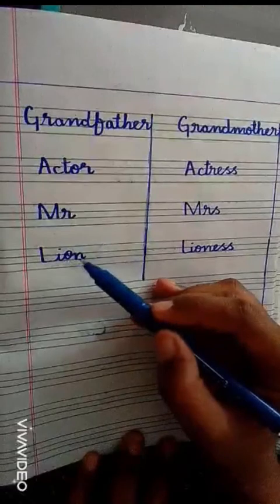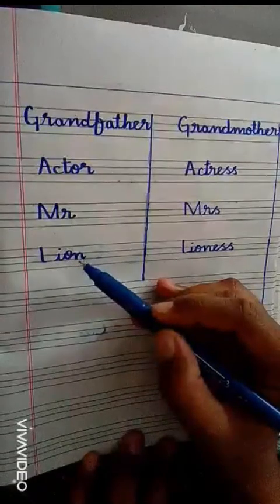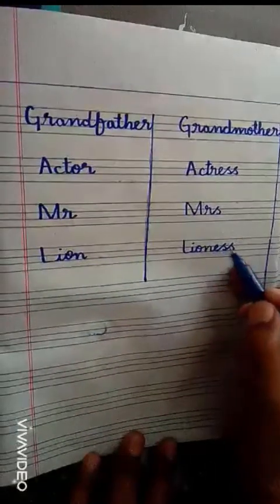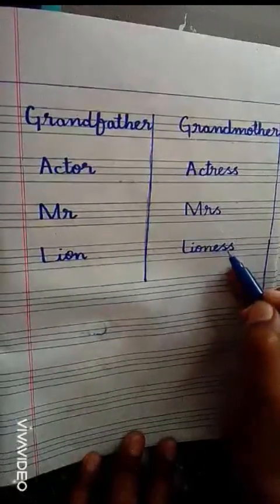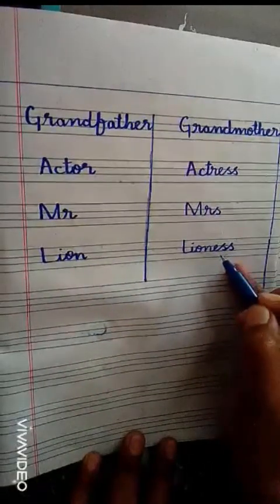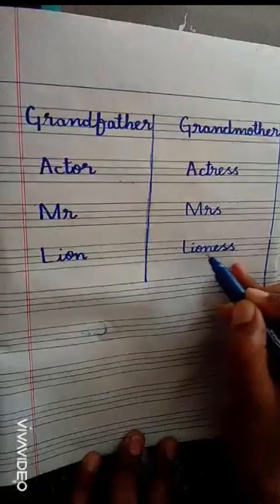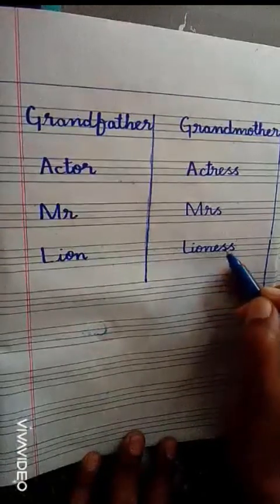Lion — L-I-O-N. That is sher. And for its feminine, we add E-S-S. Lioness — L-I-O-N-E-S-S.